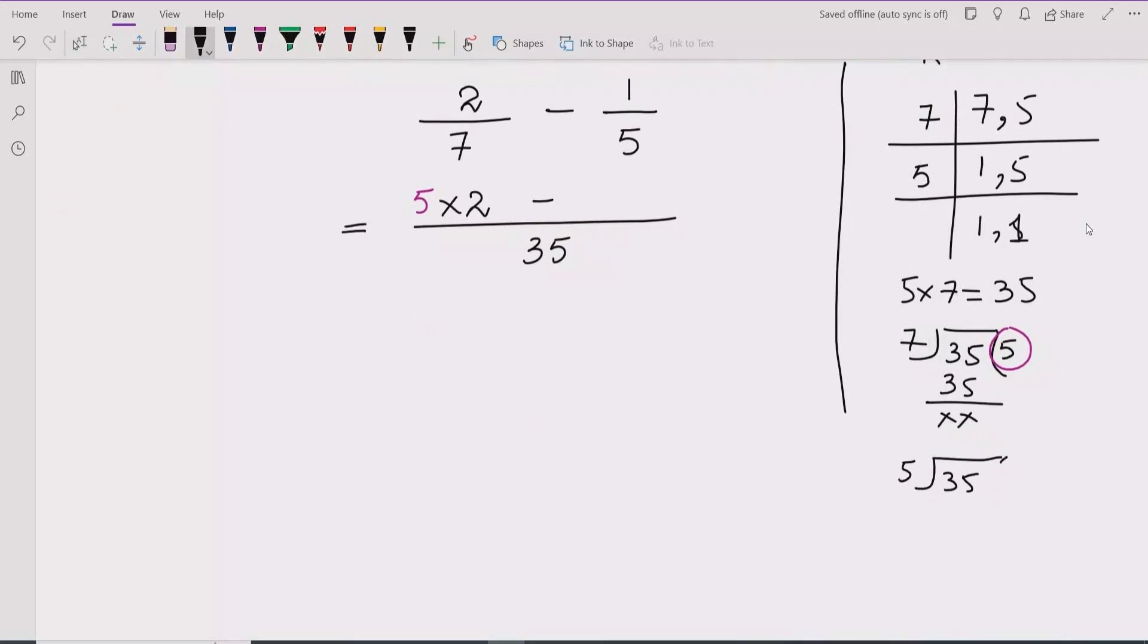35 divided by 5. So 5 times 7 is 35. So here we will multiply this 7 from, 7 multiplied by 1.